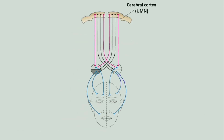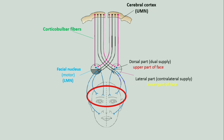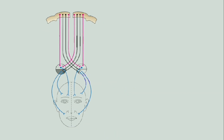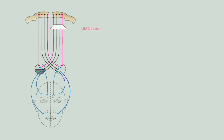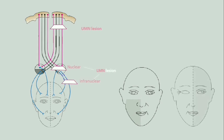The cerebral cortex controls the facial nucleus through corticobulbar fibers. The dorsal part of the facial nucleus receives dual motor supply from the cerebral cortex and supplies the upper part of the face. The lateral part of the facial nucleus only receives contralateral motor supply and supplies the lower part of the face. That is why, in an upper motor neuron lesion, the upper face is spared due to dual supply and only lower contralateral facial paralysis occurs. In a lower motor neuron lesion, there is ipsilateral total facial paralysis.